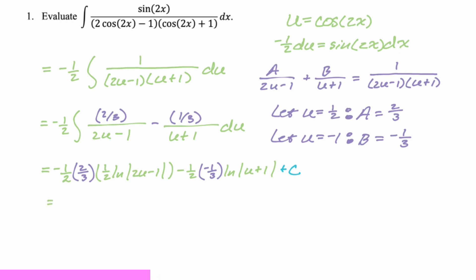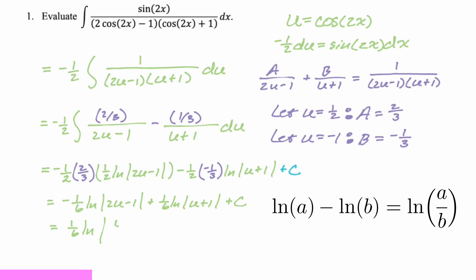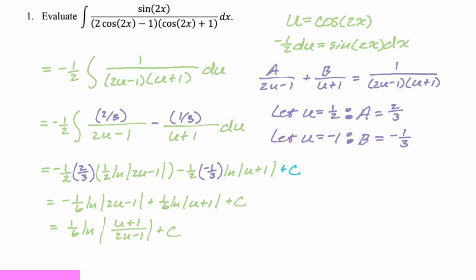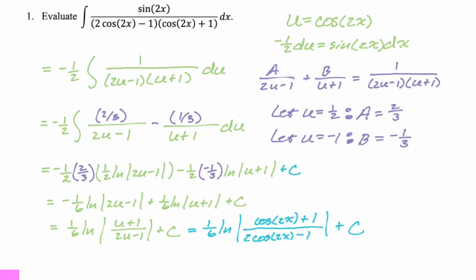We can simplify quite a bit. We end up with negative 1/6 natural log |2u minus 1| plus 1/6 natural log |u plus 1| plus C. Taking out positive 1/6 gives us natural log of (u plus 1) minus natural log of (2u minus 1), so subtraction becomes division. That gives 1/6 natural log of |u plus 1| over |2u minus 1|. Substituting back with u = cosine 2x: the answer is 1/6 times natural log of |cosine(2x) + 1| over |2 cosine(2x) minus 1| plus C.